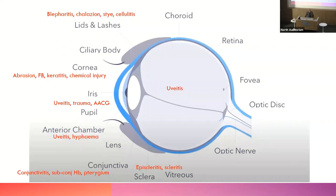Conjunctiva conditions include conjunctivitis, subconjunctival haemorrhage — which looks like blood and presents very differently to other causes — and pterygium, a wing-like growth across the front surface of the eye that starts in the conjunctiva and can grow to cover the cornea, at which point it's removed surgically.